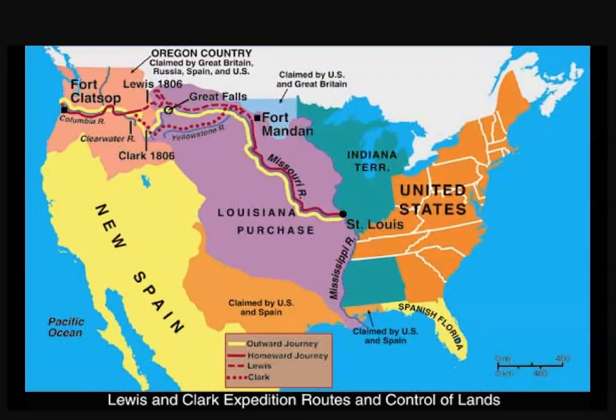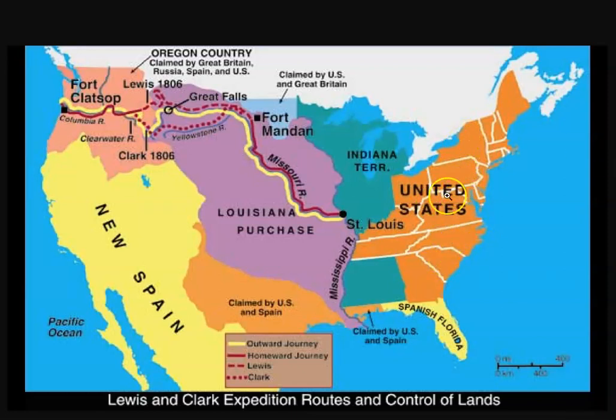So, 1803. Thomas Jefferson is President of the United States at this point — our third President. Washington got the country rolling and urged the United States to stay out of the affairs of Europe, not to play favorites, not to take sides, to avoid permanent alliances. The United States by this time is this orangey-peachy colored area — the original 13 colonies, plus Kentucky, and Ohio. The old Northwest Territory is the blue area up here.